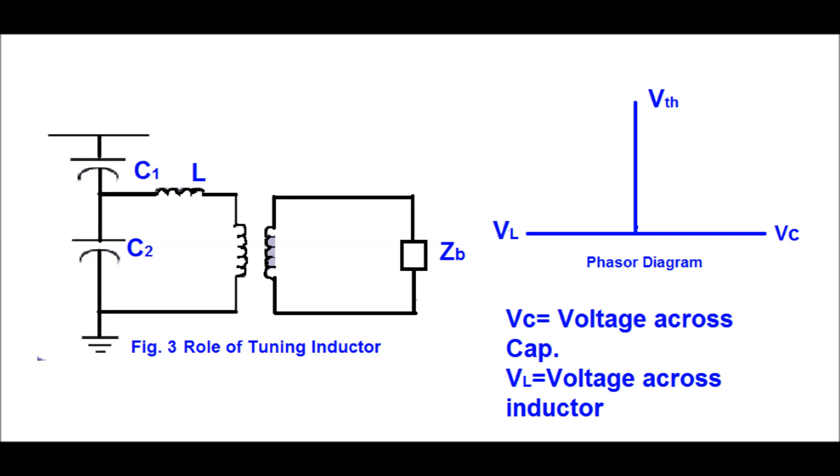The phasor diagram is shown in this figure. The value of the inductor is chosen so that it compensates for the net C at power frequency, which is 50 Hertz in India.